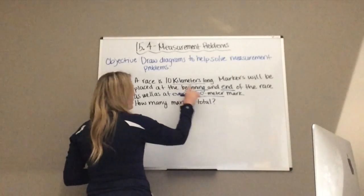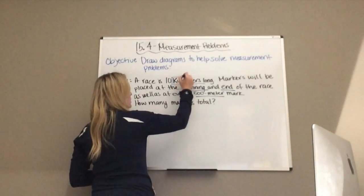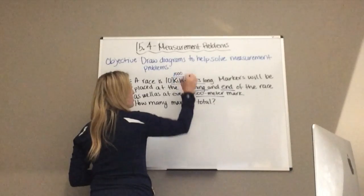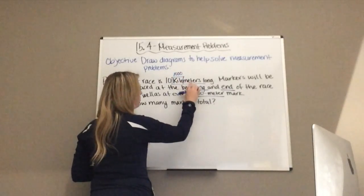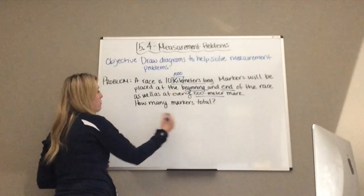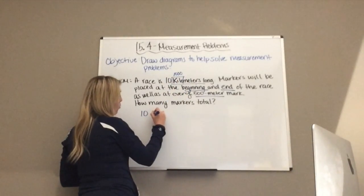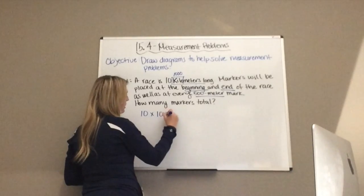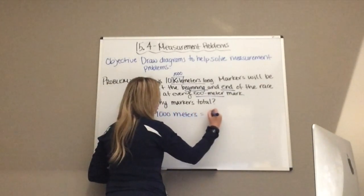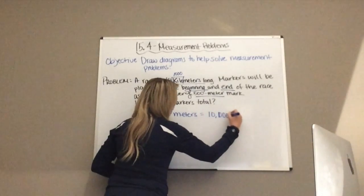We have 10 kilometers. We know for our conversions that kilo means 1,000. So this is really 1,000 meters, but we have 10 of them. So we have 10 multiplied by 1,000 meters, which equals 10,000 meters.